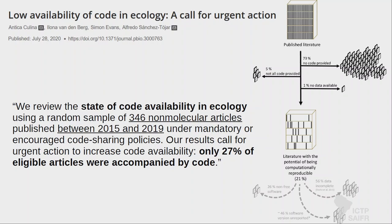What are the best practices for code release? Most of it is thinking about who is going to be looking at the code and the user — how can you make it easy for someone who gets your code to use it? This might include letting people know what software you used, what packages you used to run the code — which version of R, which version of specific packages. These are continually evolving and certain functions might change between versions.